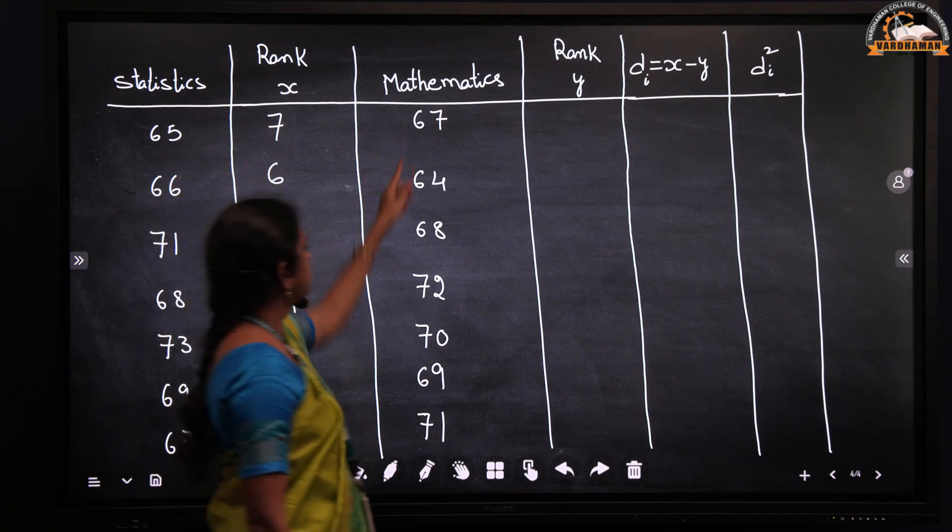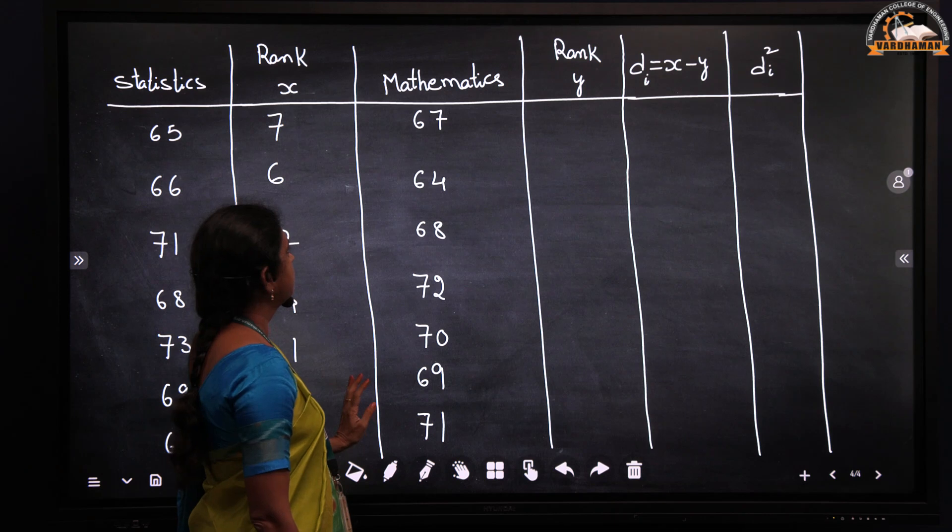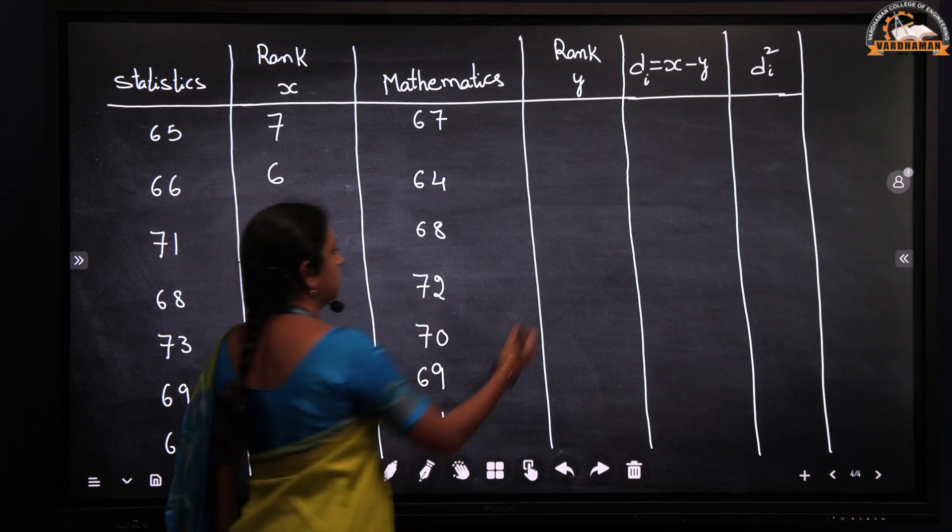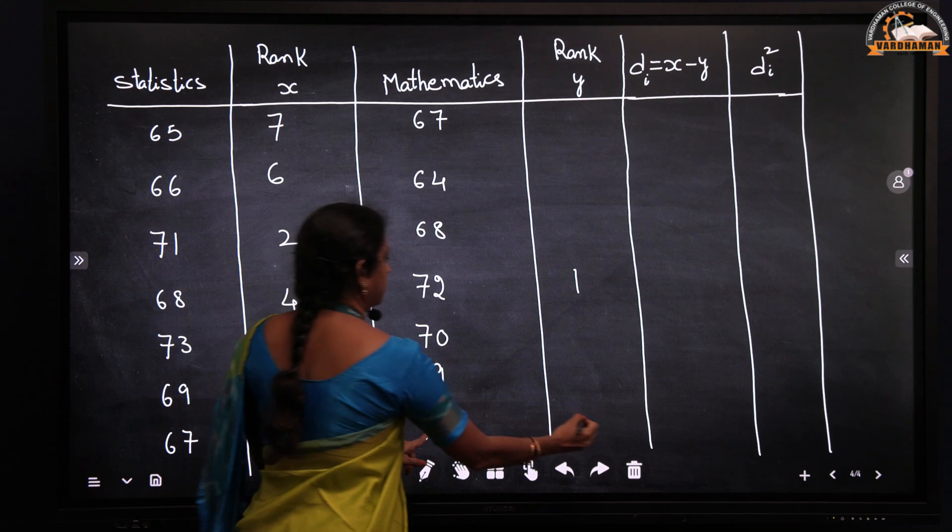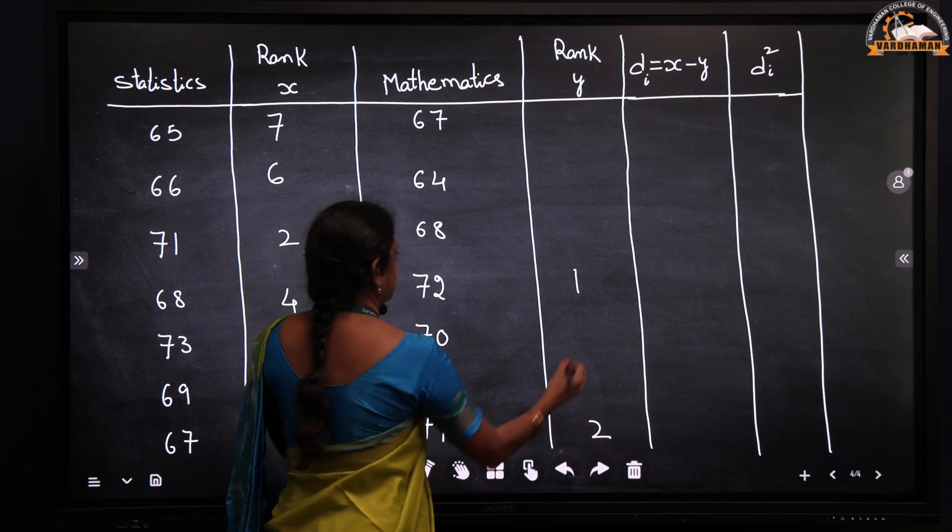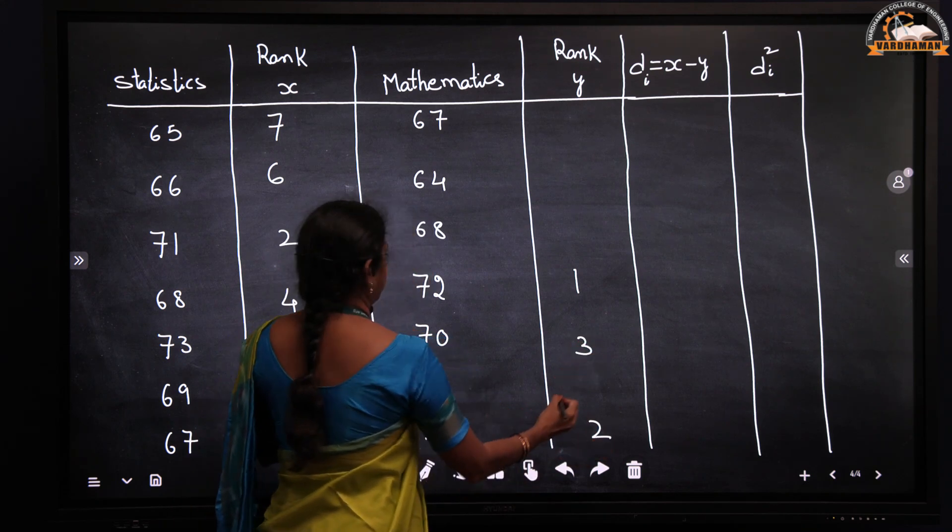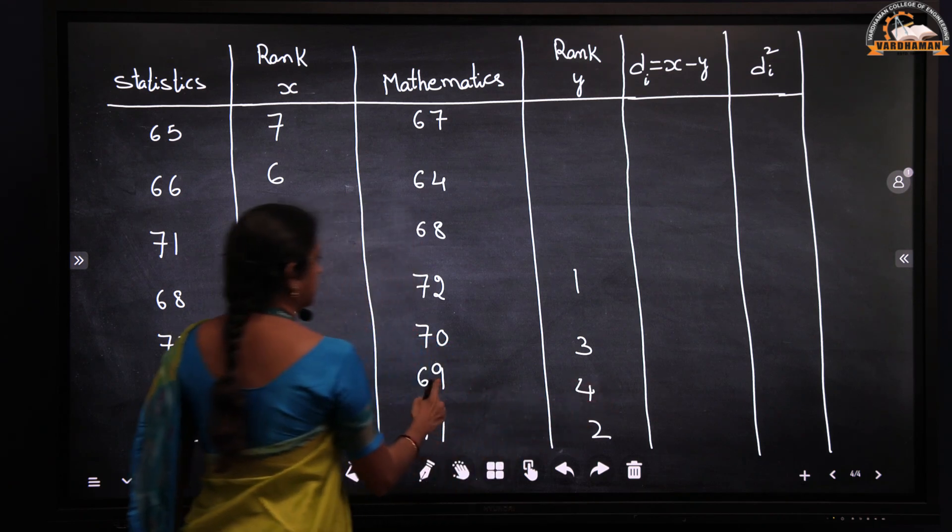Similarly for mathematics marks, we observe that 72 is the highest, so 72 is allotted 1, then 71 is allotted 2, 70 is allotted 3, 69 is allotted 4.